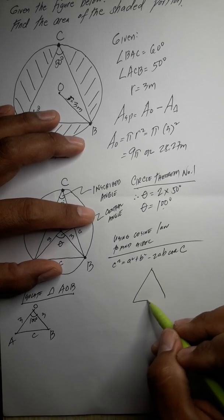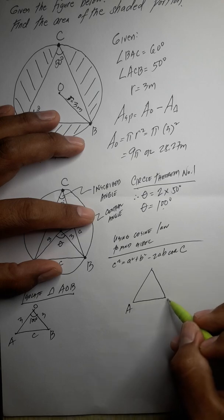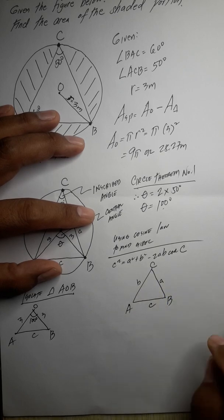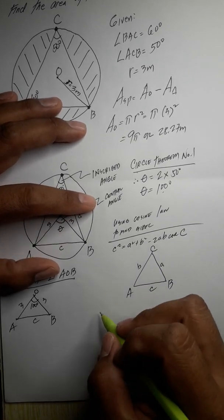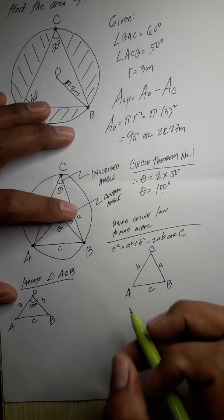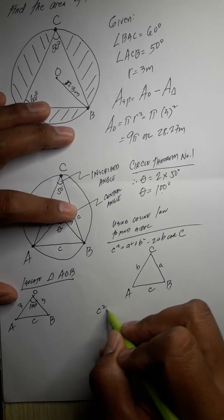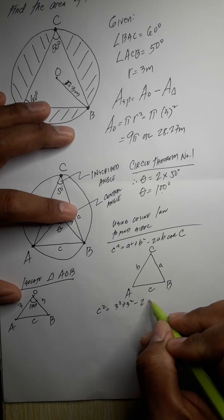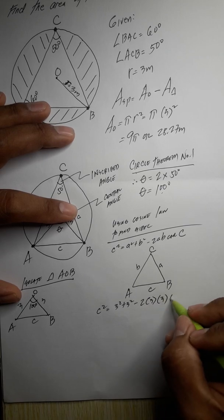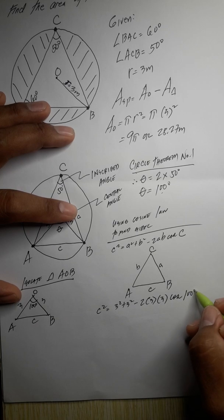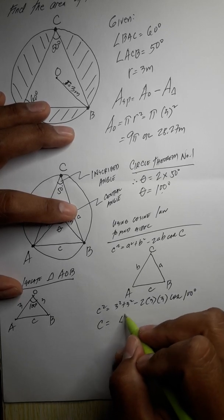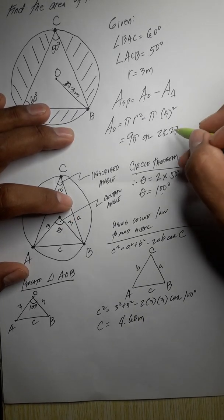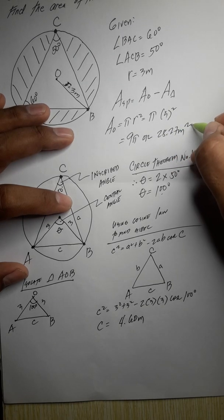From the figure, with angle A, angle B, angle C and sides a, b, c respectively, we apply the cosine law. Our c² = 3² + 3² − 2(3)(3)·cos(100°), so c equals approximately 4.6 meters. We also confirm that the area of the circle is 28.27 square meters.